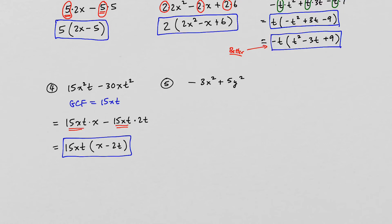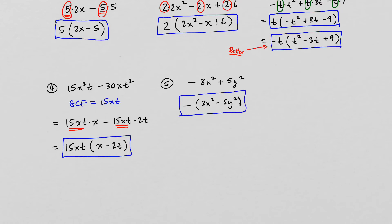In example 5, the 3 and the 5 do not have a common factor other than 1, and x squared and y squared don't share any common factors. However, we do have a leading negative. So in this problem we can, at the very least, factor out the negative, which will change the signs. There's not a whole lot to do in number 5, but we do want to factor out the negative any time we have a leading negative.